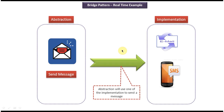Now we will see the real-time example of bridge design pattern. In bridge design pattern there are two layers. The first layer is the abstraction layer and the second layer is the implementation layer. If I make any changes in the implementation layer, it won't affect the abstraction layer. Like that, if I make any changes in the abstraction layer, it won't affect the implementation layer, as per the bridge design pattern.